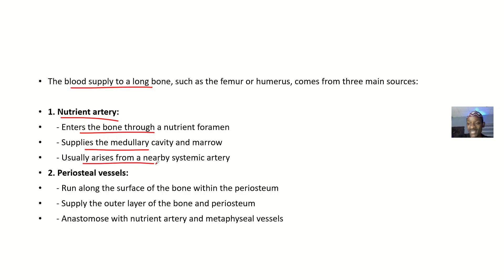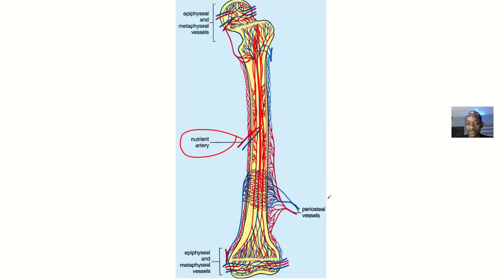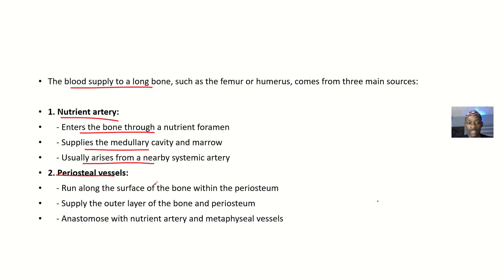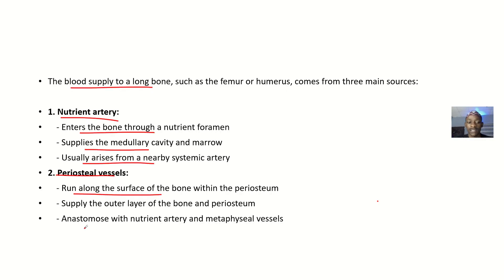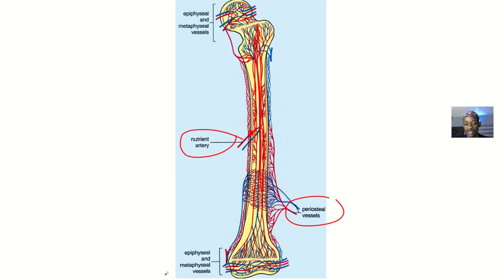The nutrient artery usually arises from a nearby systemic artery — that's just by the way. Next, we have the periosteal vessels. These run along the surface of the bone within the periosteum. They supply the outer layer of the bone, and they anastomose with the nutrient arteries and the metaphyseal vessels.